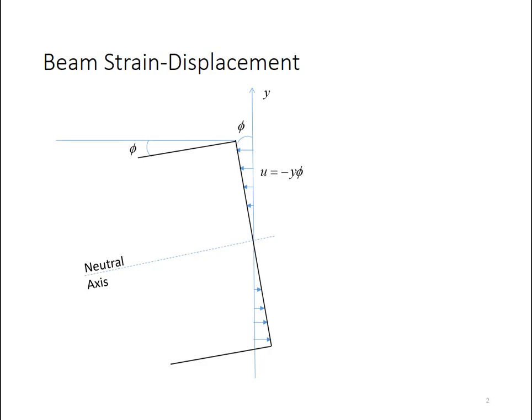Now I can describe the displacements of points on that planar surface in terms of the angle phi. Specifically, I say that u is equal to minus y times phi. This is for small angle approximation. So the negative sign comes in because with a positive angle phi, I get displacement in the top half of the beam to the left and in the bottom half of the beam to the right.